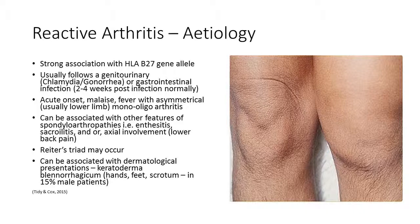The cause of reactive arthritis, like most of the seronegative arthropathies, has an association with the HLA-B27 gene allele. It usually follows a genitourinary or gastrointestinal infection, with symptoms typically beginning two to four weeks post-infection. There is acute onset with malaise and fever, with asymmetrical, usually lower limb, mono or oligoarthritis — more sporadic than rheumatoid arthritis, tending to be unilateral and often involving the lower limb. It can also be associated with other features of spondyloarthropathy — enthesitis, sacroiliitis, axial involvement, and lower back pain.